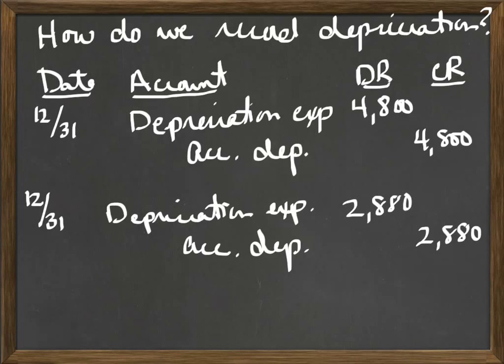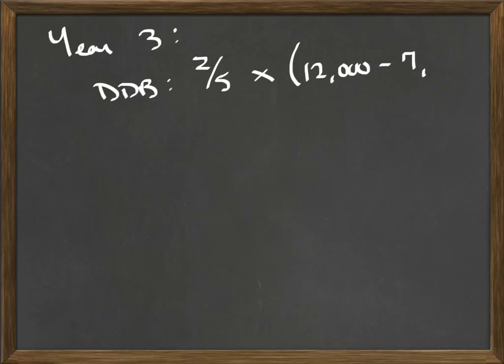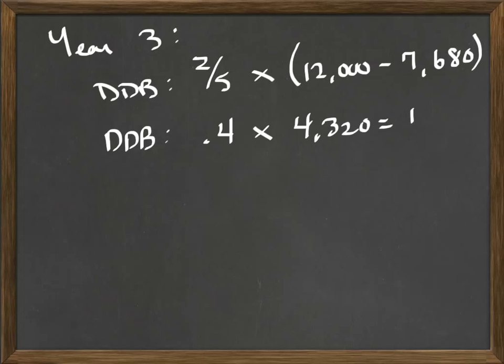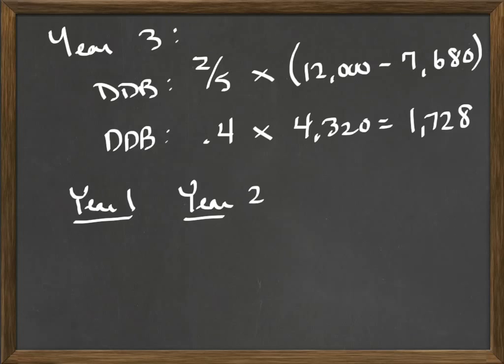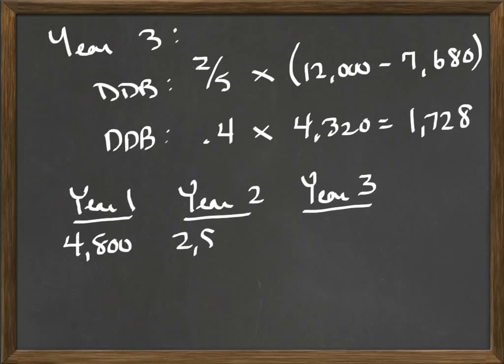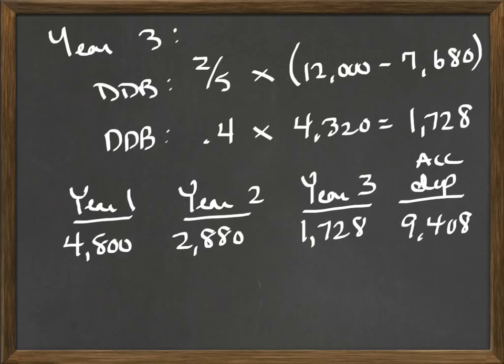Now let's look at year 3. We take 2 over 5, the 0.4, and multiply it by cost minus accumulated depreciation. We saw that accumulated depreciation is $7,680 at this point. So we take 12,000 minus 7,680, giving us 0.4 times 4,320, which gives us $1,728. That is our depreciation for the third full year. So year 1 was $4,800, year 2 was $2,880, and year 3 was $1,728, bringing us to a total of $9,408.